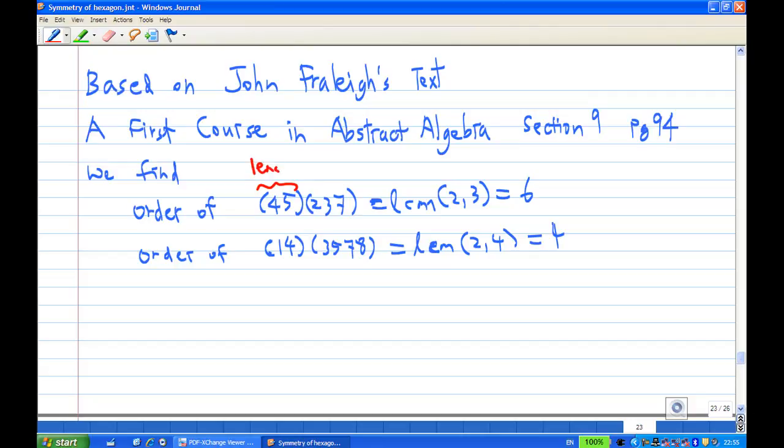Similarly, we can look at the order of (1,4)(2,3,7,8). We find that (1,4) is a 2-cycle, (2,3,7,8) is a 4-cycle. The order of this permutation is LCM of 2 and 4. Notice that this works only when the cycles are disjoint. Then you can use the LCM to find the order of permutation.